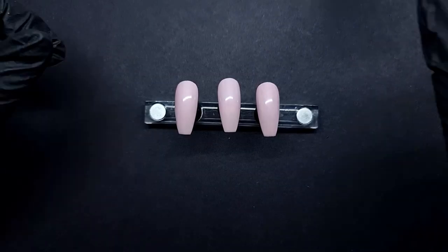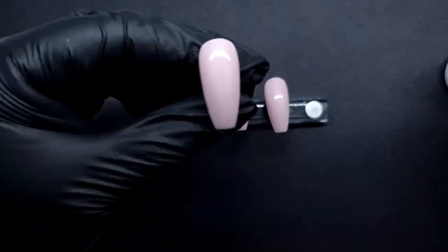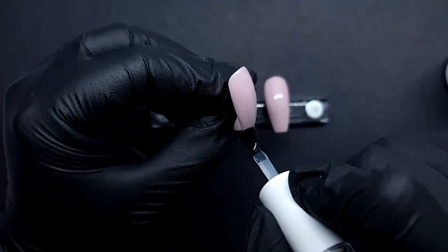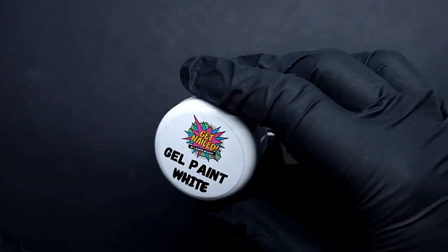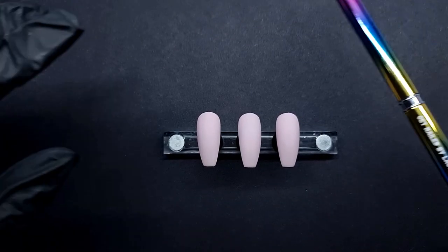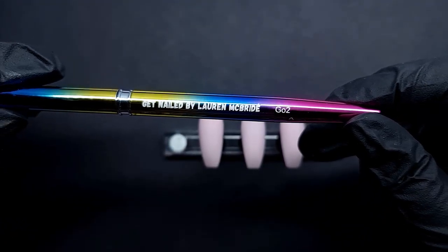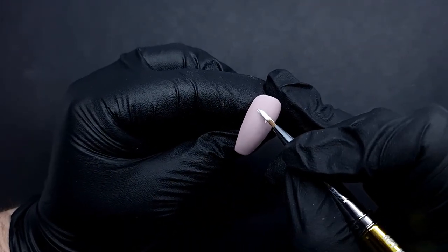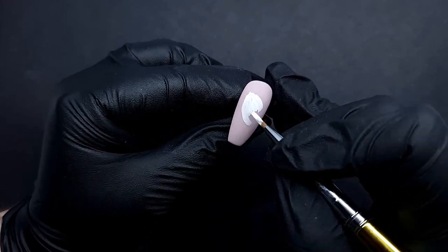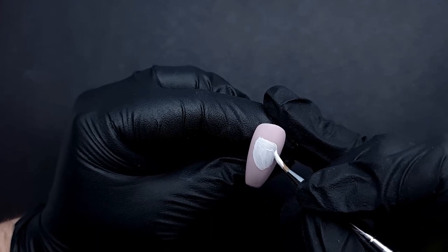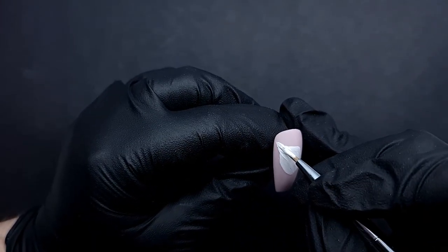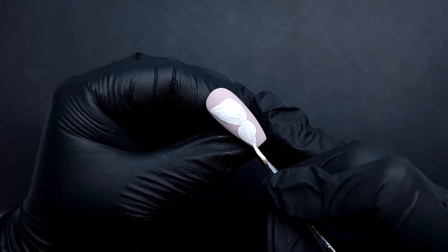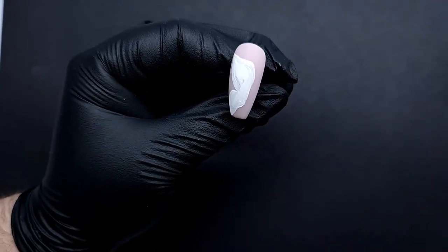Now I'm going to paint one layer of Material Girl and cure that for 60 seconds. Using white gel paint, my go-to brush and my 5mm liner brush, I'm going to start painting my butterfly, getting a general shape with this brush because it applies a lot more product than my 5mm brush.